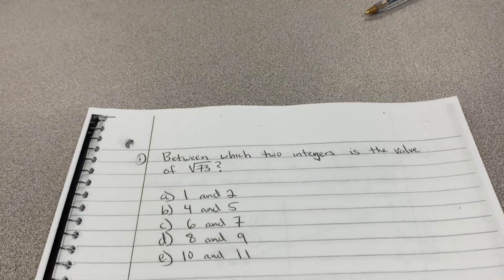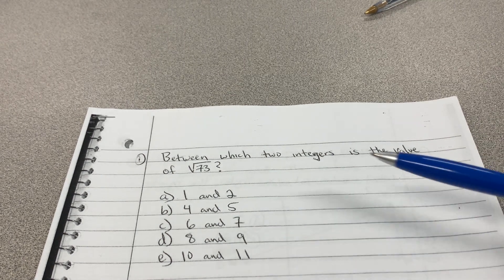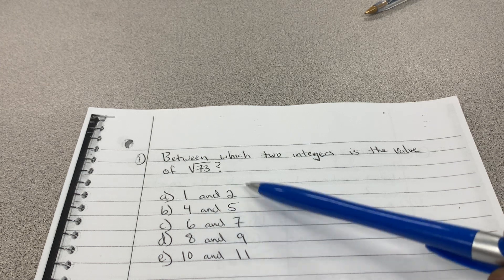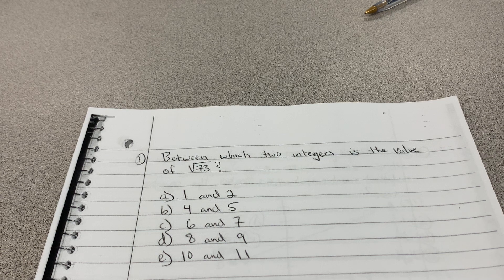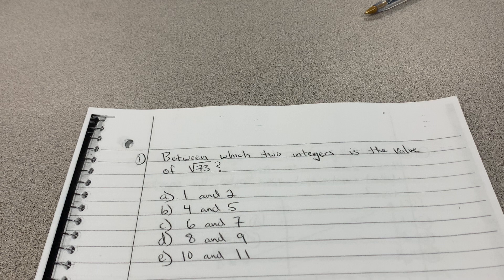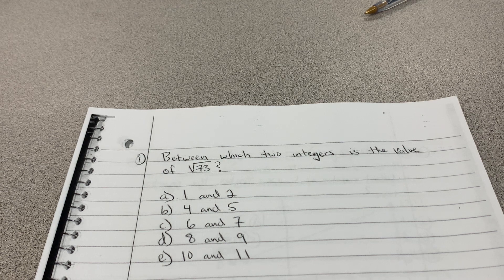So, on the test, you can always square your answers and see what they're in between, like 1 to the second power is 1, 2 to the second power is 4, 73 is not in the middle of those things. But if I just did the square root of 73 in the calculator, then it will tell me what I need to know.